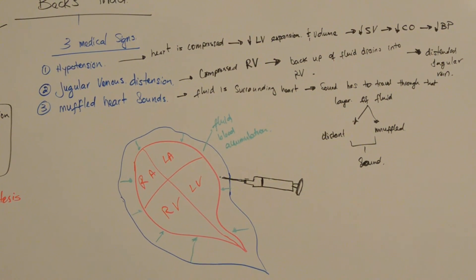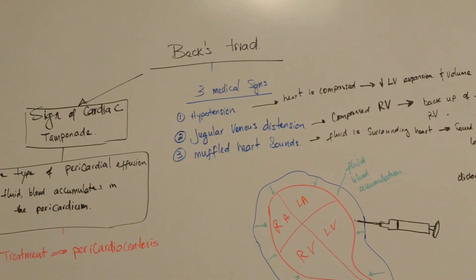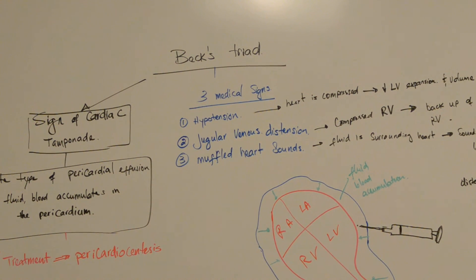The second sign we're going to talk about is jugular venous distension. Jugular venous distension is just the distension of the neck veins. The jugular veins in the neck are distended. It is the rising of the venous pressure that is evidenced by the distended jugular veins while the patient is in a non-supine position.